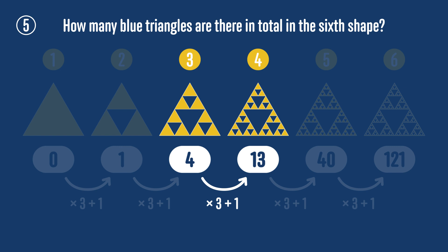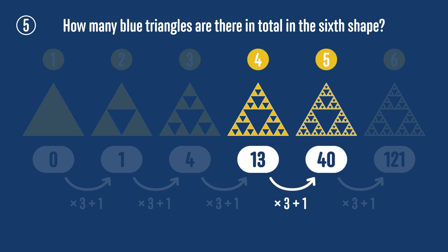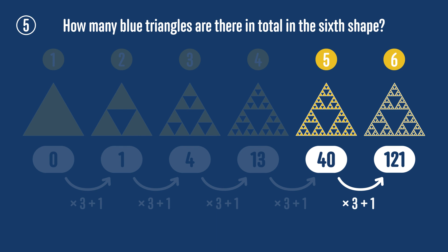So continuing this sequence, we would get 13 times 3 plus 1, or 40 triangles for the fifth shape, and 40 times 3 plus 1, or 121 triangles for the sixth shape. However you did it, well done if you got the answer.